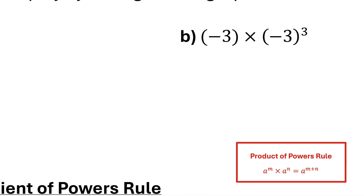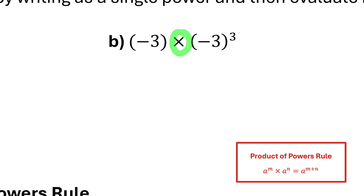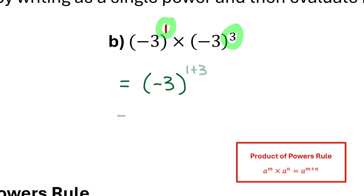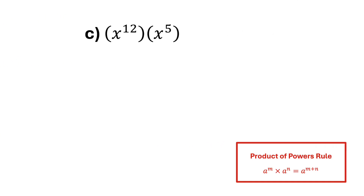Moving on to part b: I have two powers of negative 3 being multiplied together. I keep that base of negative 3 and add their exponents. There's no written exponent on the first power of negative 3, so there's an exponent of 1. The new exponent is 1 plus 3, so as a single power this is negative 3 to the power of 4, and four factors of negative 3 being multiplied together is positive 81. For part c, I have two powers of x being multiplied. I keep the base of x and add the two exponents, 12 plus 5, making this equal to x to the power of 17. I can't evaluate this because the variable x is unknown.